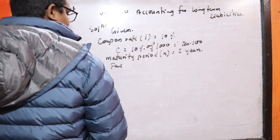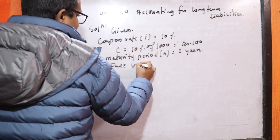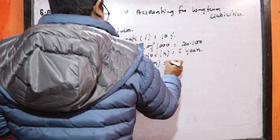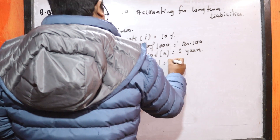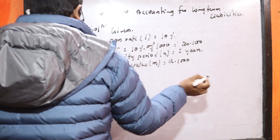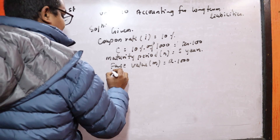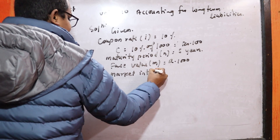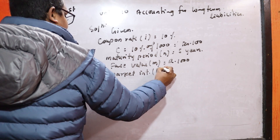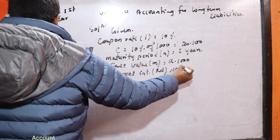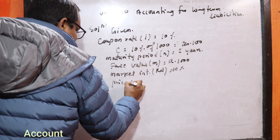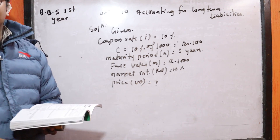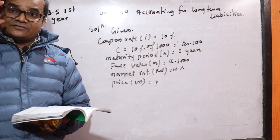I am going to pay for the face value. We are going to pay based on the market rate. The interest rate is 12%, and the price is denoted as P0 or B0.